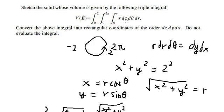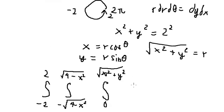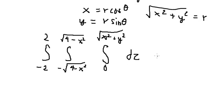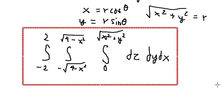For dz, we keep the same. Then r d theta with dr, and we change back to dy dx. So dz, and that is the final answer. This is the end.